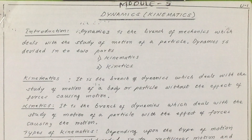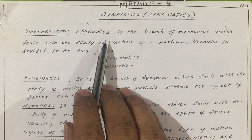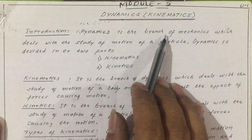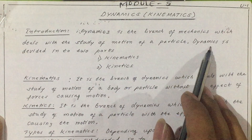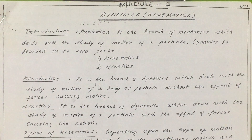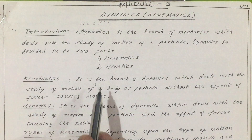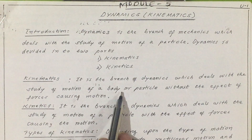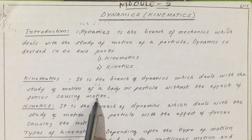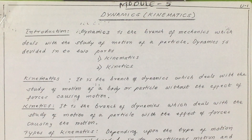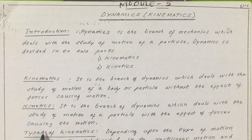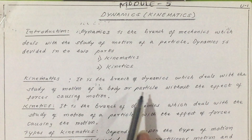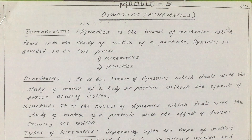First of all, we are going to deal with kinematics. Before that, how can we define dynamics? Dynamics is the branch of mechanics which deals with the study of the motion of a particle. Dynamics is divided into two parts: kinematics and kinetics. Kinematics is the branch of dynamics which deals with the study of motion of a particle without the effect of forces causing the motion. Kinetics is the branch of dynamics which deals with the study of motion of a particle with the effect of forces causing the motion. In kinematics, we neglect the effect of force; in kinetics, we include the effect of force.